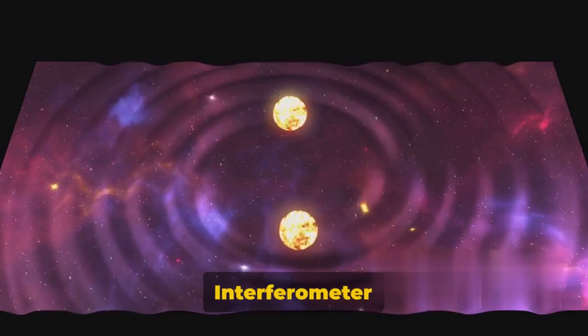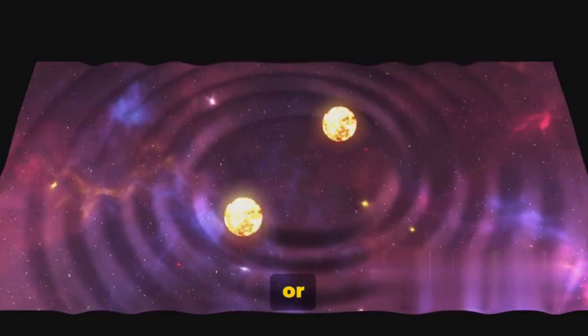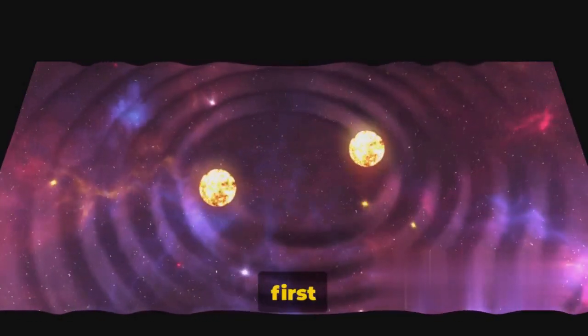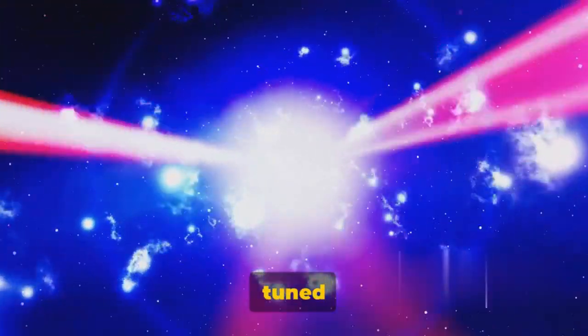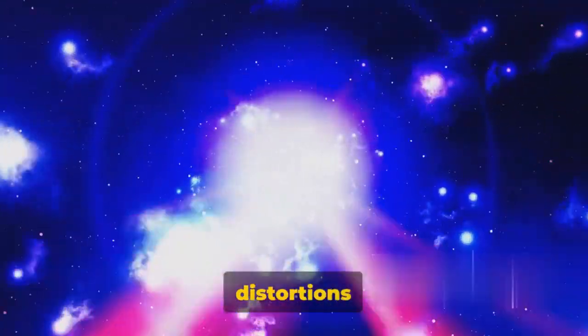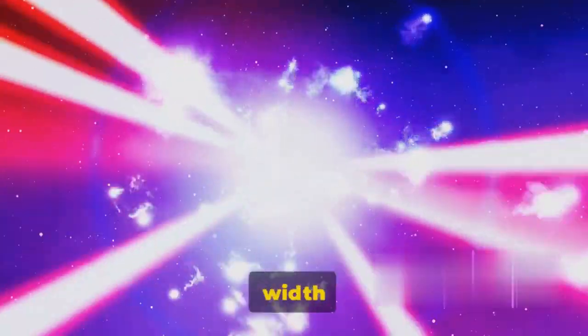The Laser Interferometer Gravitational Wave Observatory, or LIGO for short, made the first direct detection of these waves. Using a pair of finely tuned lasers, LIGO can detect distortions smaller than a fraction of the width of a proton.